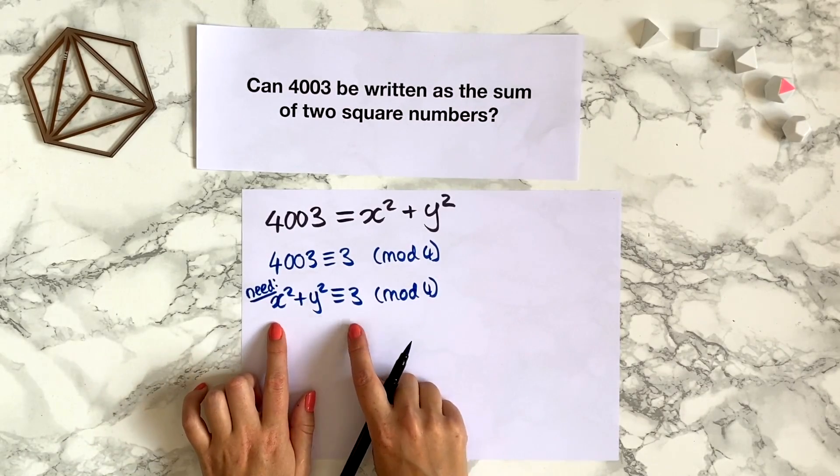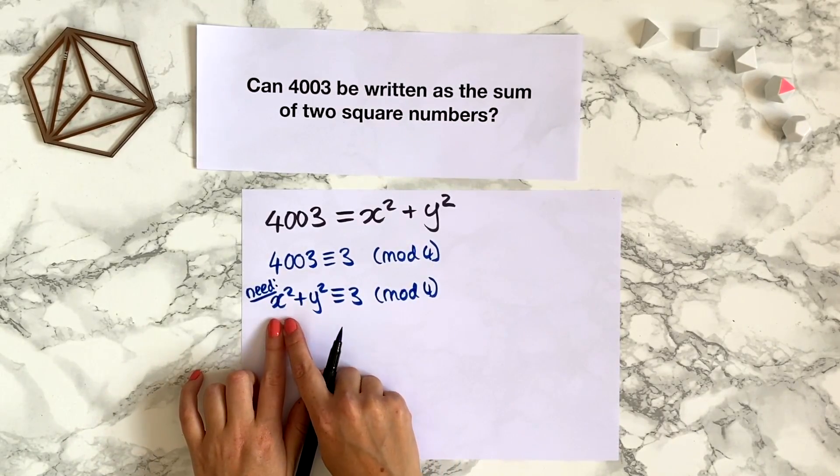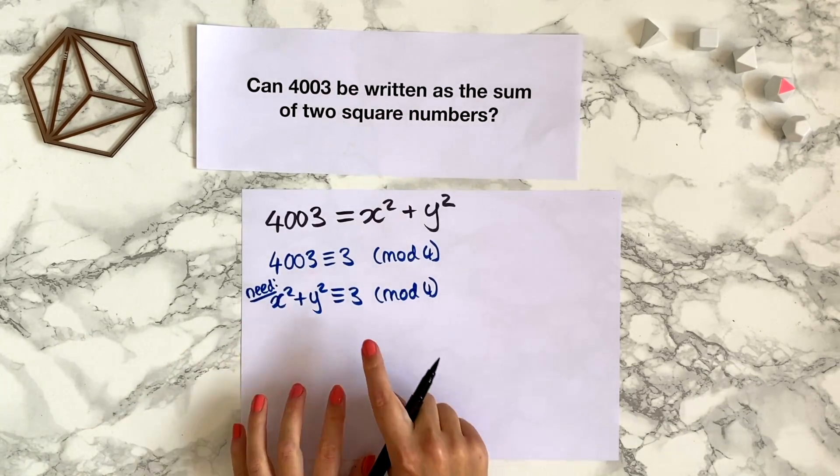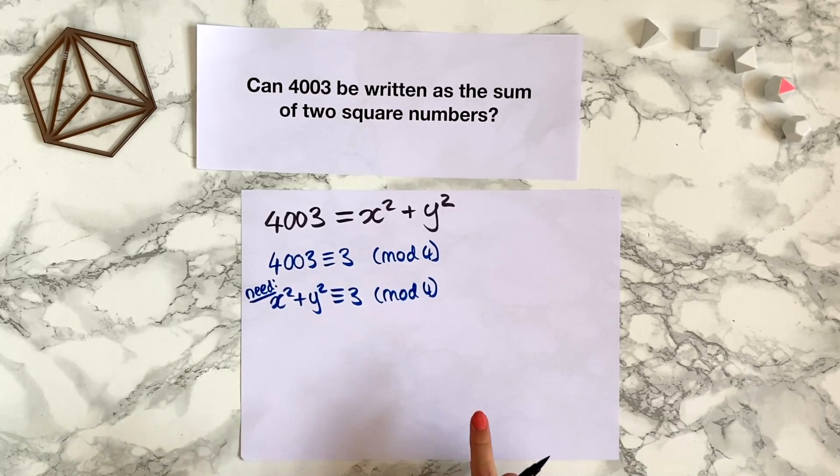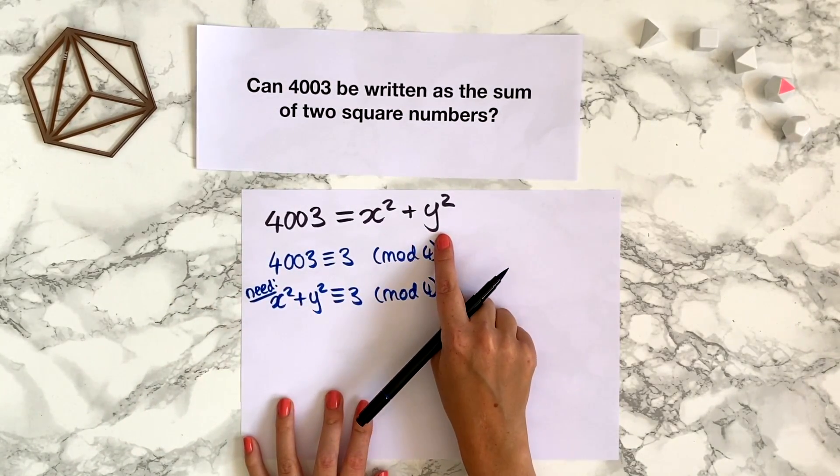Now this is interesting. Let's check that that is actually possible. Is it possible to have two square numbers added together and that sum is congruent to 3 modulo 4? Because if that's not possible, then we can't write 4003 as the sum of two square numbers.